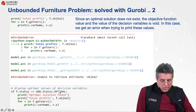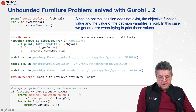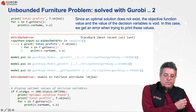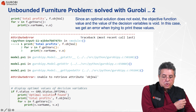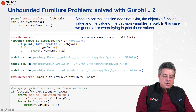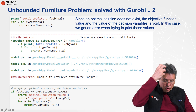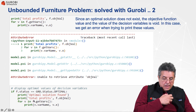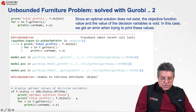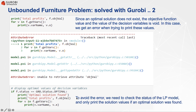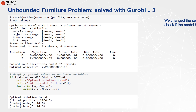If GRB.status.optimal is true, it means an optimal solution has been found, and you can print the decision variables and the objective function value. We need to add that part of the code to be able to print a solution when we have one.